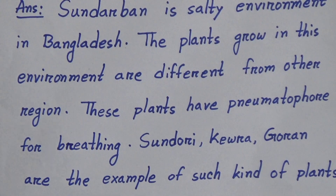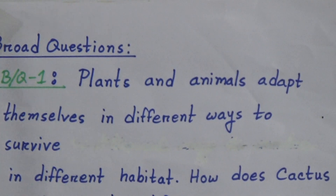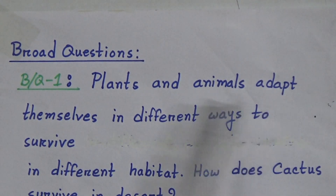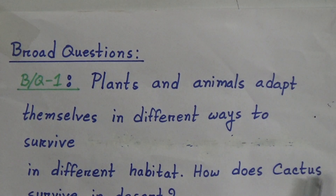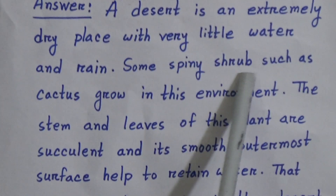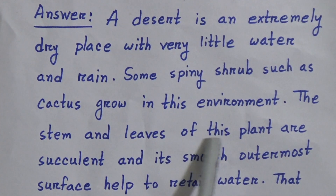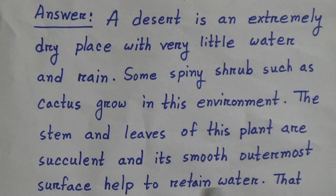Now we will do broad questions. Broad question one: plants and animals adapt themselves in different ways to survive in different habitats. How does cactus survive in the desert? Answer: a desert is an extremely dry place with very little water and rain. Some spiny shrubs such as cactus grow in this environment. The stem and leaves of this plant are succulent and its smooth outermost surface helps to retain water.